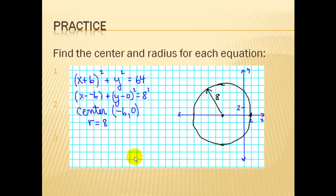The graph of the second problem with its center is shown here. Again, go from the center — in this case 8 units. Each block is 2 units, so 4 blocks in each direction: 4 blocks, 4 blocks, 4 blocks, 4 blocks — and then try to sketch in your circle the best you can.